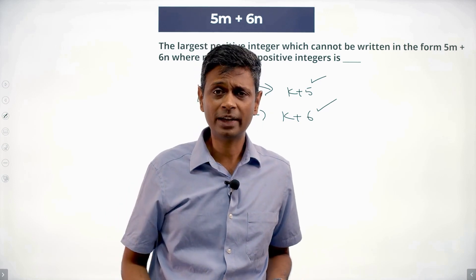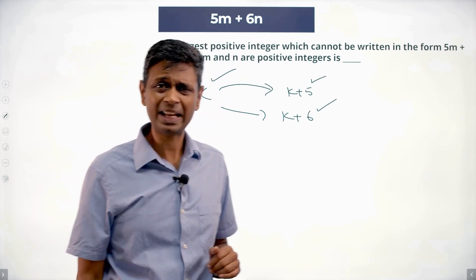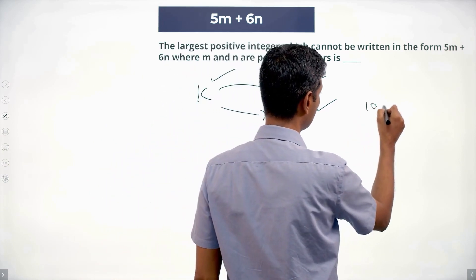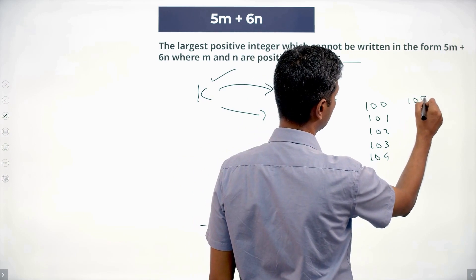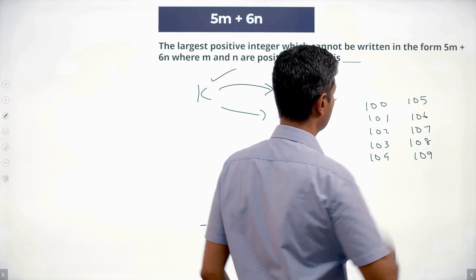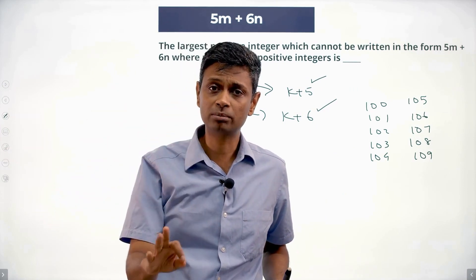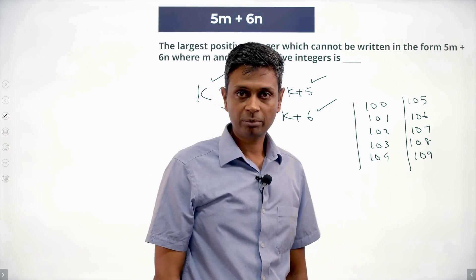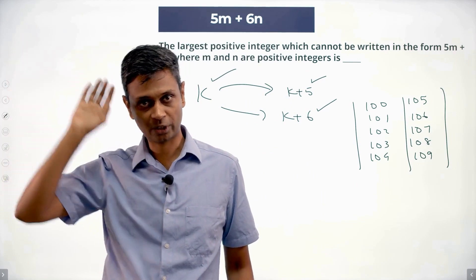For example, if I have 103, I can get 108 and 109. This means: the moment I have five consecutive numbers that are all writable — say hypothetically 100, 101, 102, 103, 104 — then adding 5 to each gives 105, 106, 107, 108, 109, and so on. Every natural number after that is reachable. Five consecutive writable numbers means I'm through!